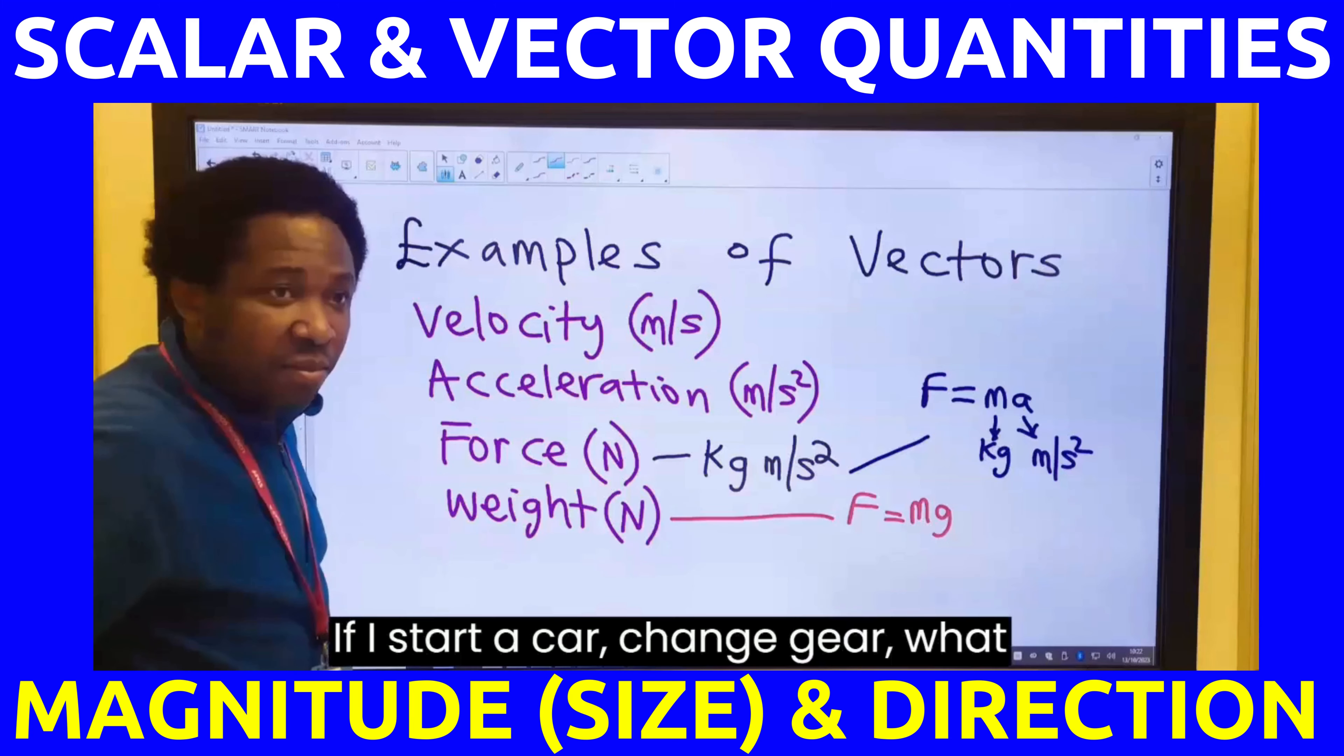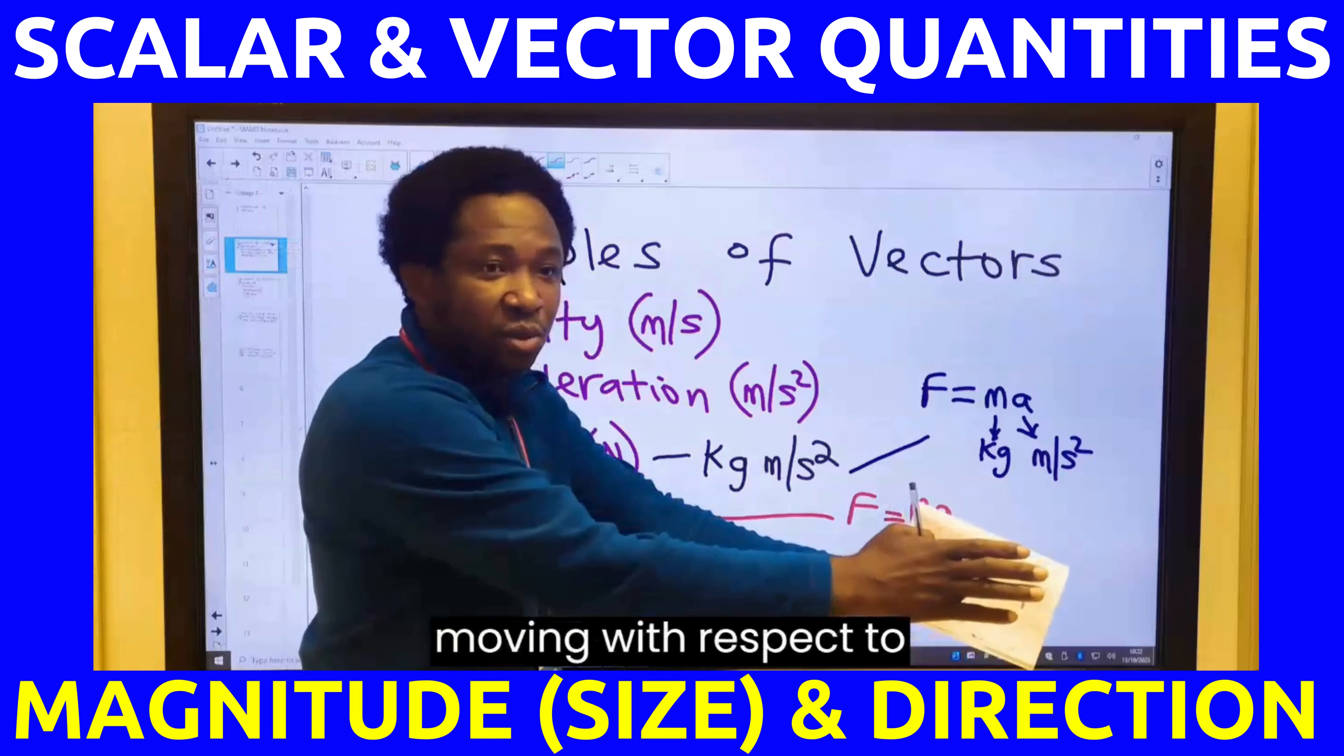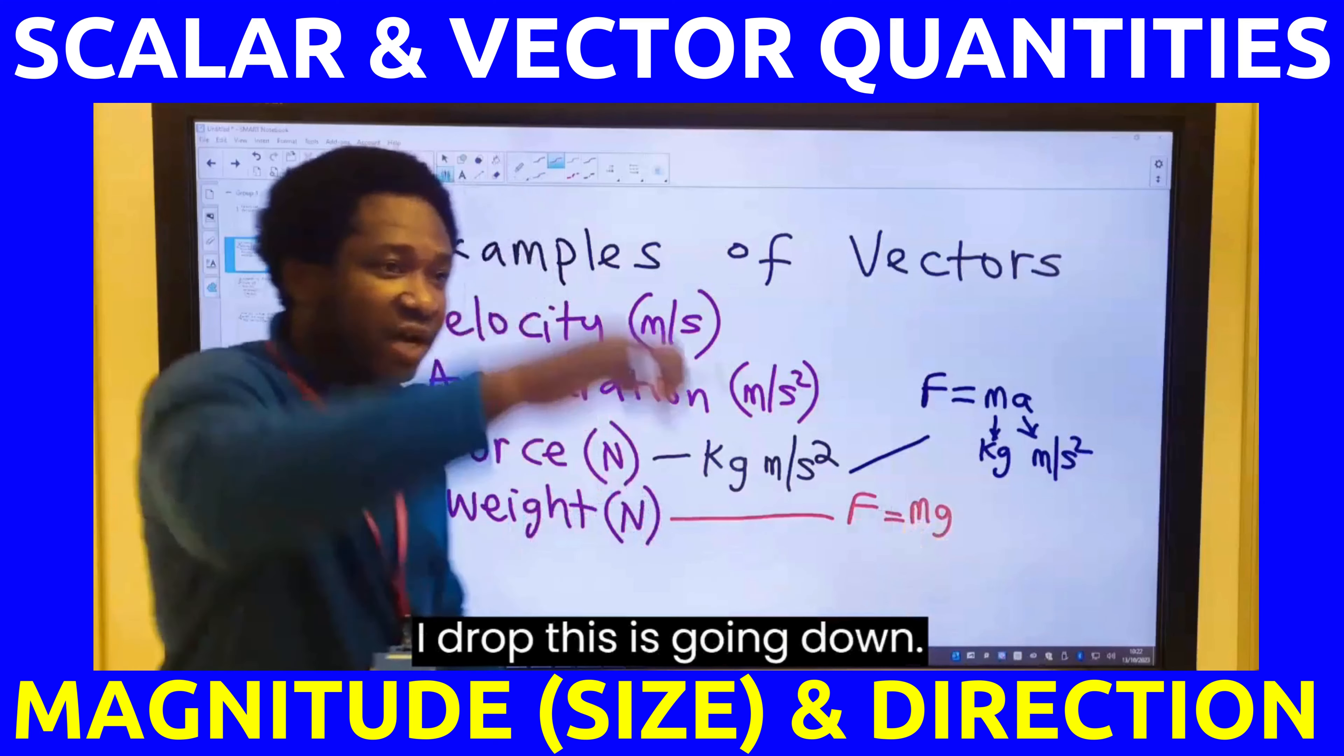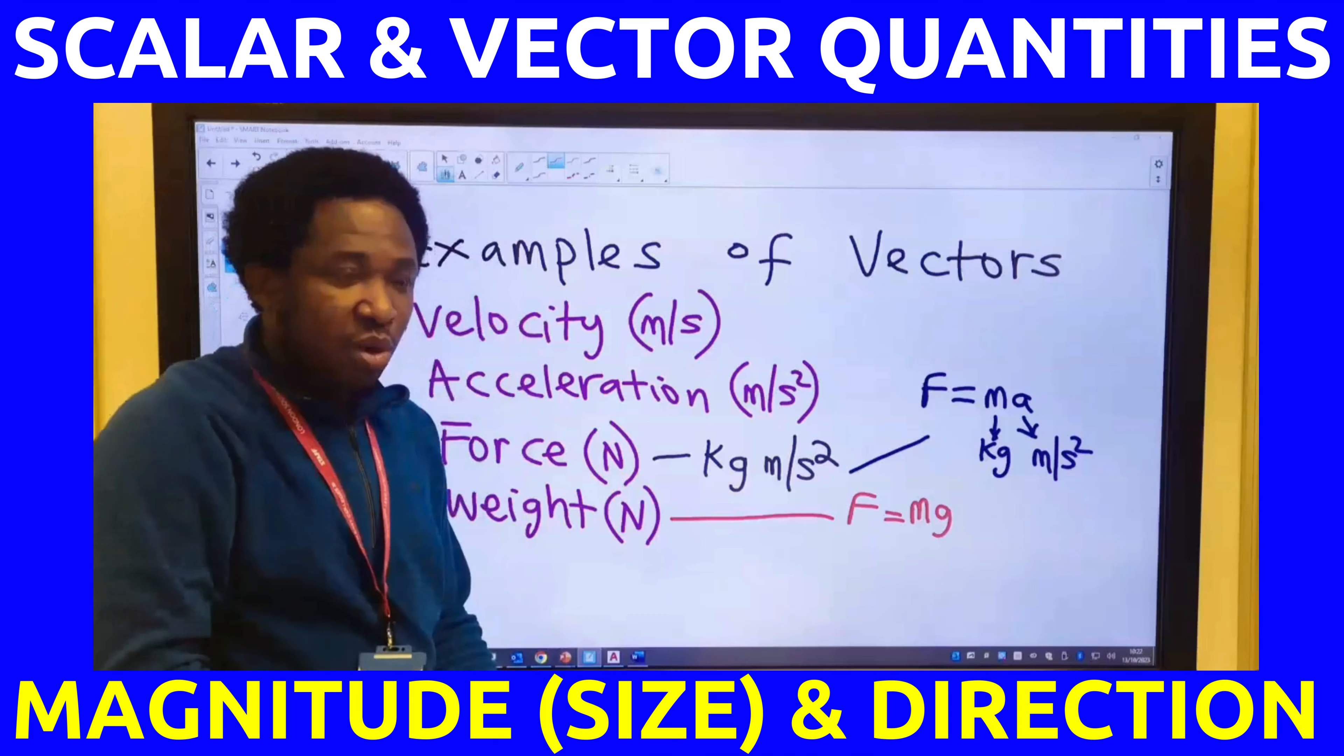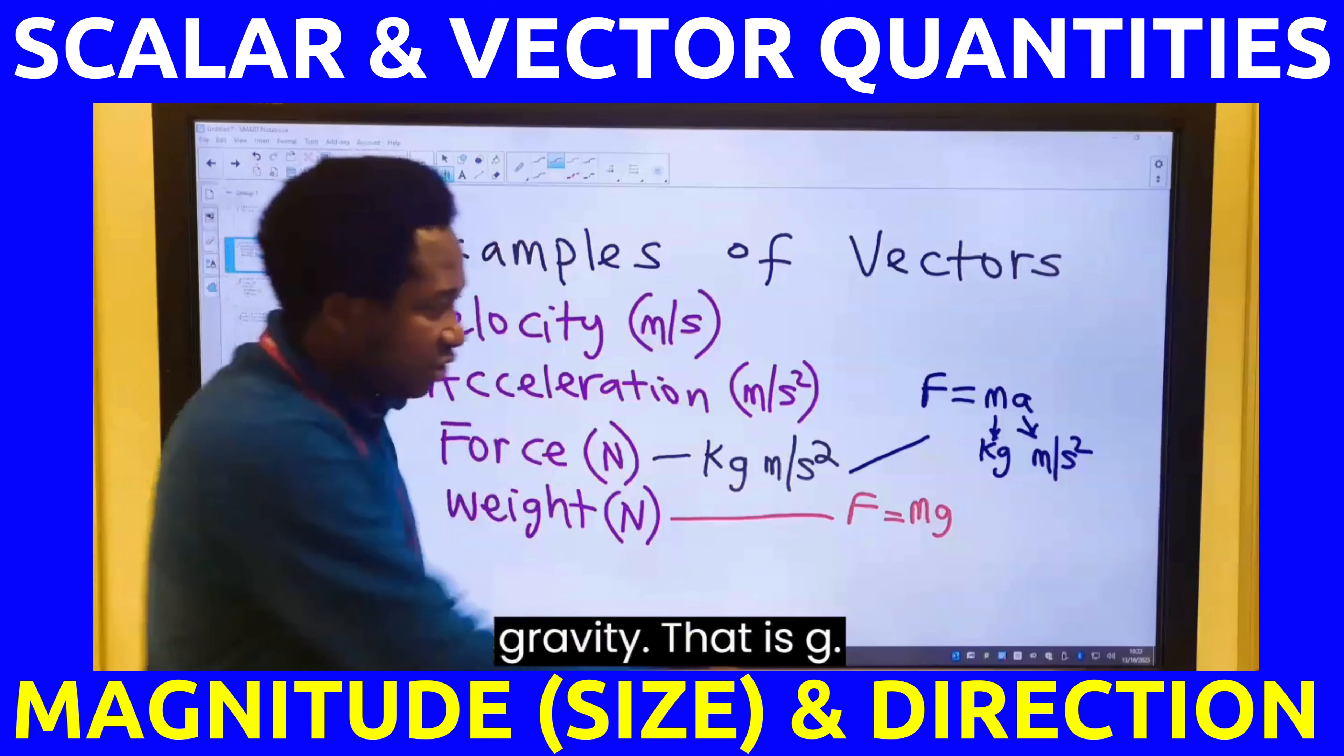If I start a car, change gear, what happens? The mass of the car is moving with respect to acceleration. But if I drop this, it's going down. What happens? There is a pull of this mass toward gravity. That is g.